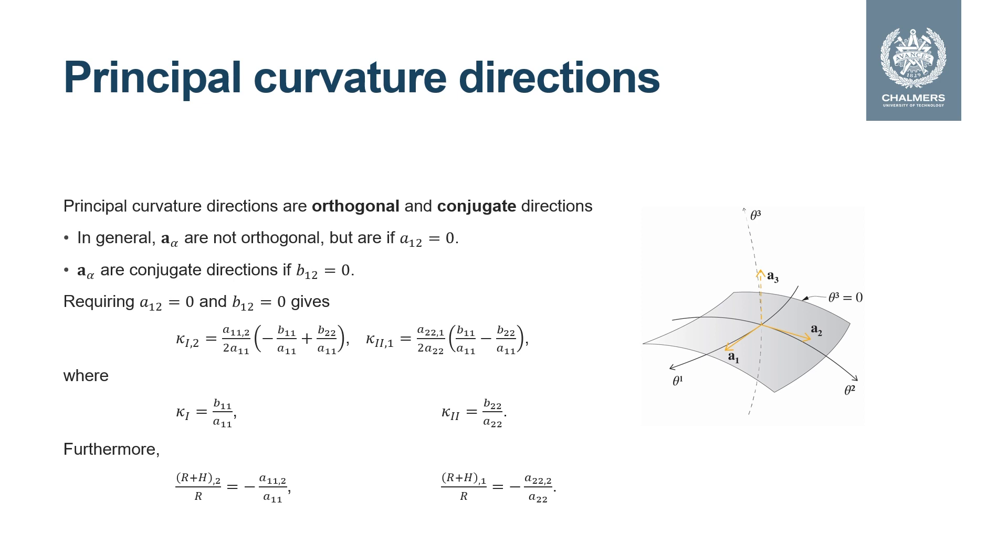By definition the principal curvature directions are orthogonal and conjugate directions. However the covariant base vectors which are tangential to the coordinate systems are in general not. To make the coordinate system follow the principal curvature directions we have to impose some properties. To make them orthogonal we require A12 to be zero and to be conjugate we require B12 to be zero.